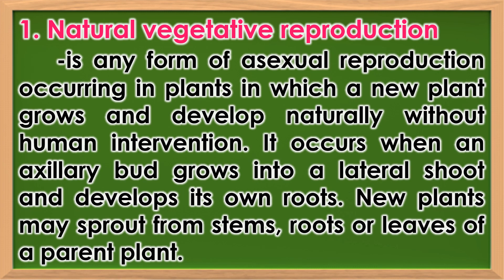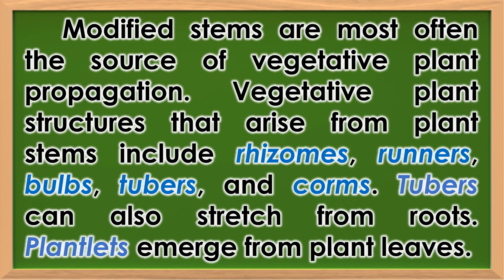Natural vegetative reproduction is any form of asexual reproduction occurring in plants in which a new plant grows and develops naturally without human intervention. It occurs when an axillary bud grows into a lateral shoot and develops its own roots. New plants may sprout from stems, roots, or leaves of a parent plant. Modified stems are most often the source of vegetative plant propagation. Vegetative plant structures that arise from plant stems include rhizomes, runners, bulbs, tubers, and corms. Tubers can also arise from roots, and plantlets emerge from plant leaves.